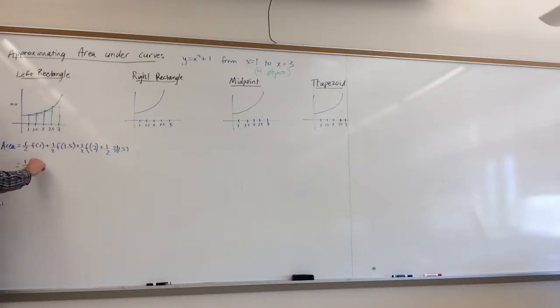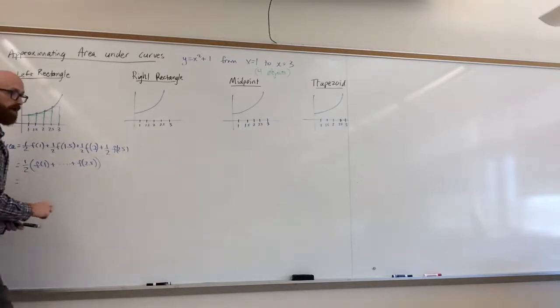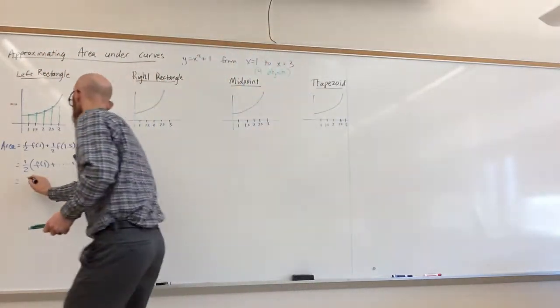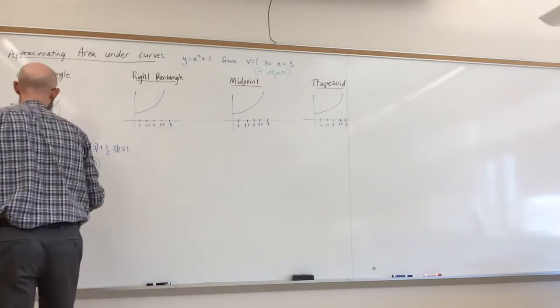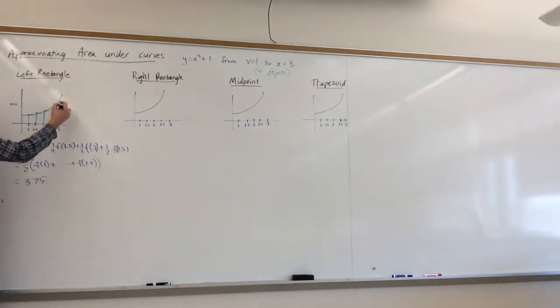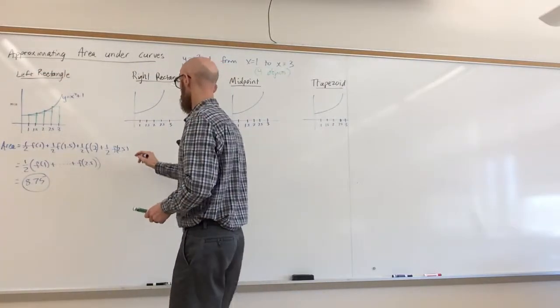Yes, you could factor out a half. So you could do, I'm just using a dot for brevity here, but you could pull a half out of everything. I'll leave you to calculate that. It turns out to be 8.75. To calculate what f of 1 is, remember that you're on the curve y equals x squared plus 1. So for example, f of 1 is 1 squared plus 1, or 2. f of 1.5 will be 1.5 squared plus 1, which will be 3 and a quarter. So you add them up and you get this as your approximate area.